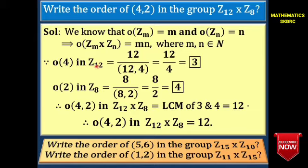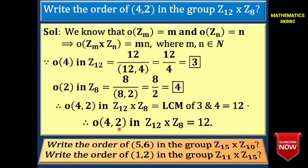The order of 4 in Z₁₂ = 12 / GCD(12, 4) = 12 / 4 = 3. The order of 2 in Z₈ = 8 / GCD(8, 2) = 8 / 2 = 4. Therefore, the order of the element (4, 2) in Z₁₂ × Z₈ = LCM(3, 4) = 12.